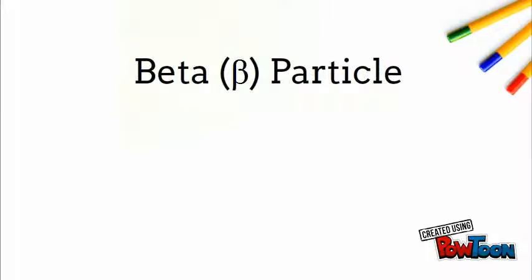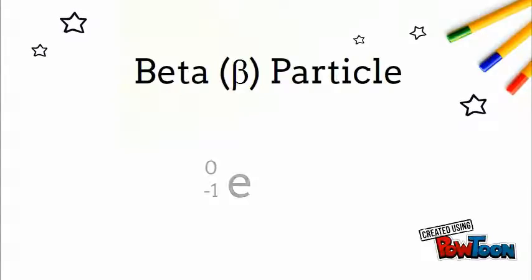Another common product is the beta particle, which is a fast-moving electron. When a beta particle is emitted from the nucleus, the atomic mass number remains unchanged, while the atomic number increases by one. It looks like this.